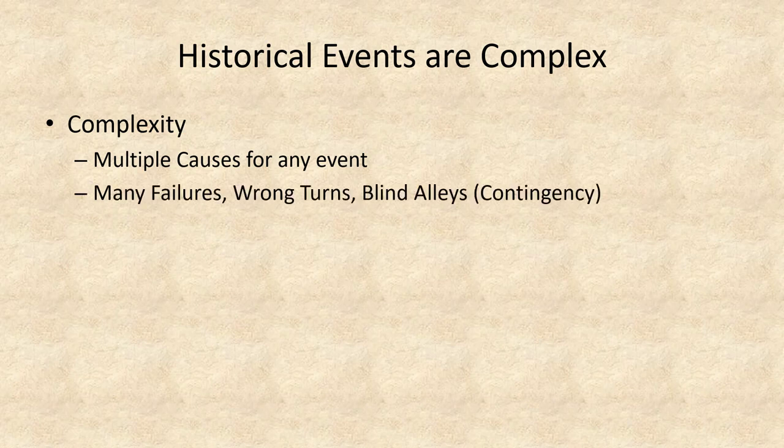A second aspect of our idea of complexity is that we see historical events after they happened, so we know how a sequence of events ended. This deludes us into thinking that the people in those historical events also knew what the outcome would be. But that's just not so. Instead, historical events and historical actors have many failings. They take wrong turns, they turn down blind alleys, and they leave loose ends. We consider this to be a way contingency affects history, and we'll discuss contingency in another lecture in this module.